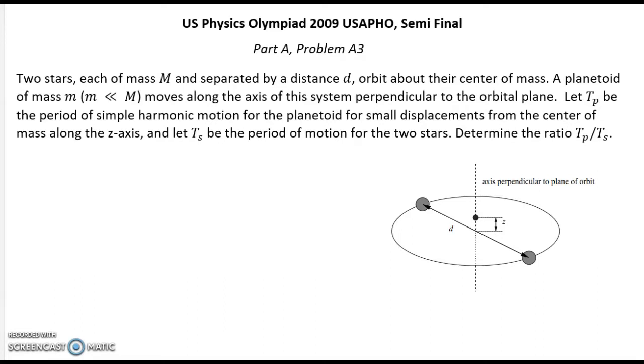So problem A3. Two stars each of mass big M and separated by distance d orbit about the center of mass. A planetoid of mass small m, much less than big M, moves along the axis of the system perpendicular to the orbital plane.